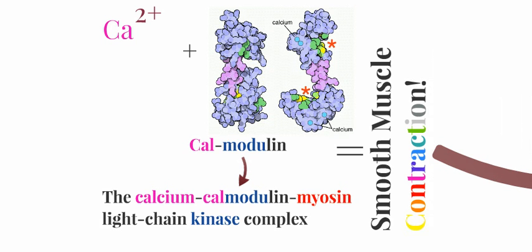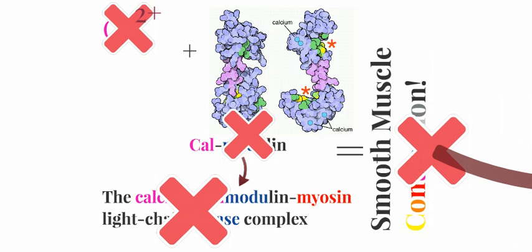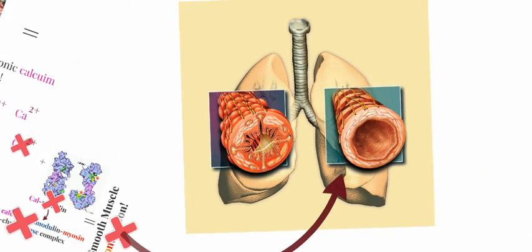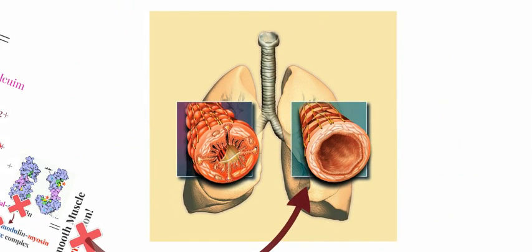We actually get contraction in the muscle with calcium. But if we don't have calcium, then it doesn't attach to the calmodulin, then it doesn't go down this complex, then we don't get a contraction at all. And that's how we actually get bronchodilation.